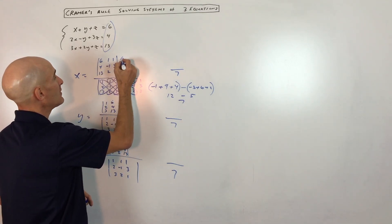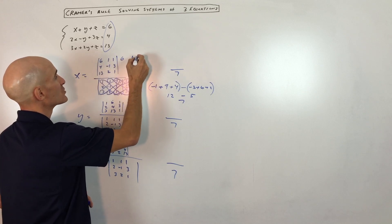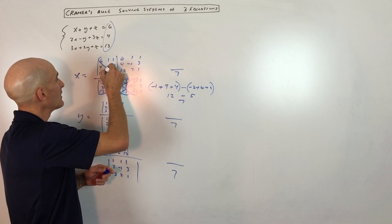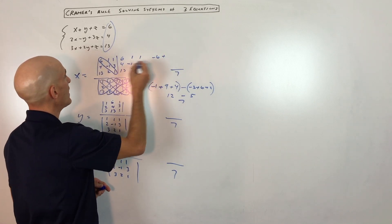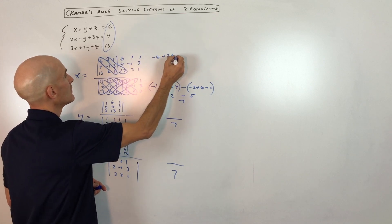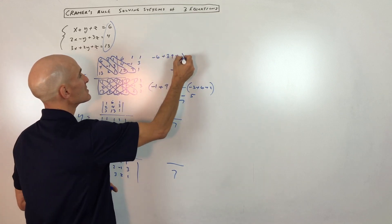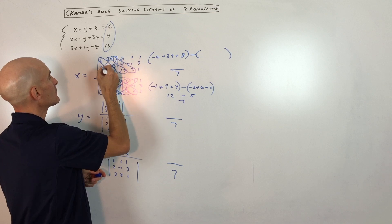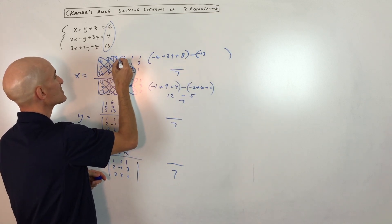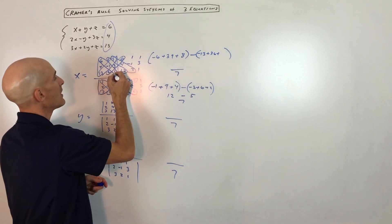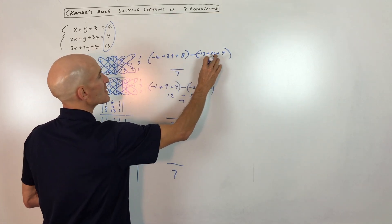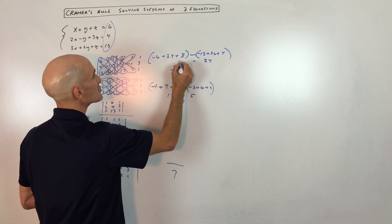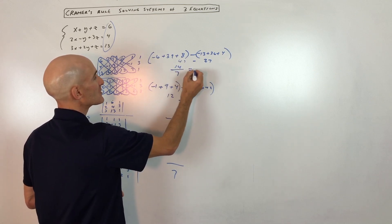We do the same thing for the numerator determinant — copy the matrix side by side and multiply on the diagonal. That gives 1 times 3 times 13 which is 39, plus 1 times 4 times 2 which is 8. Then going up to the right: negative 13, and 2 times 3 times 6 gives 36, and 1 times 4 times 1 gives 4. So 47 minus 6 is 41, and that's 40 minus 13 which is 27, and 41 minus 27 is 14. And 14 divided by 7 is 2.